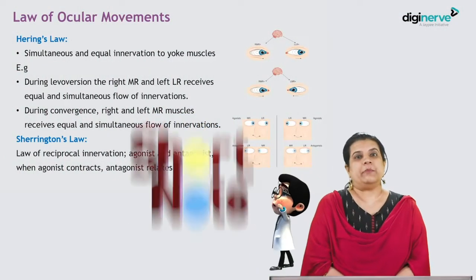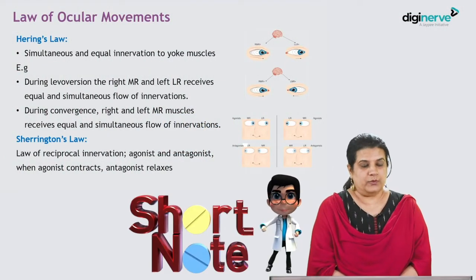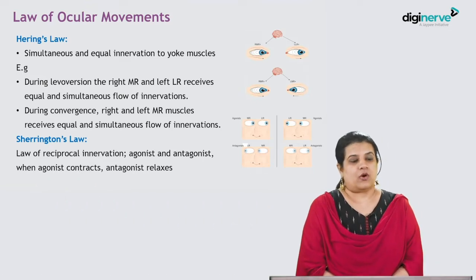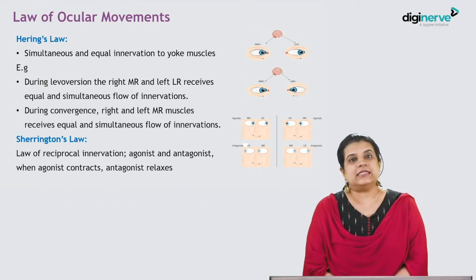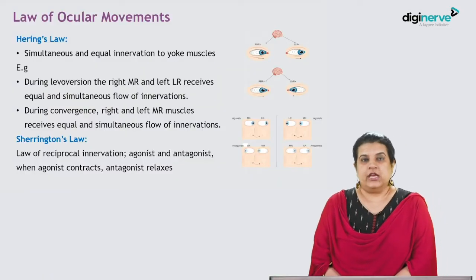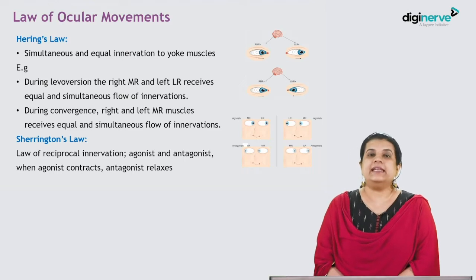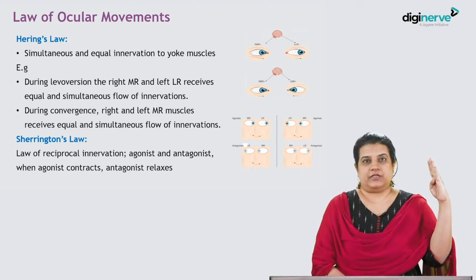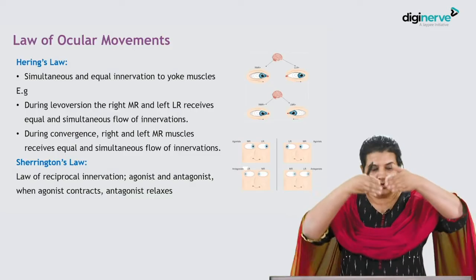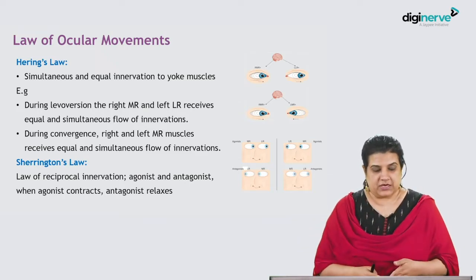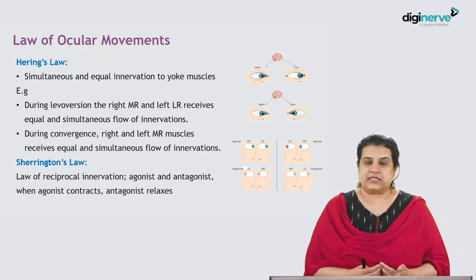Eye movements are governed by two laws: Hering's law and Sherrington's law. Hering's law refers to simultaneous and equal innervation to the yoke muscles. During levoversion, the right medial rectus and the left lateral rectus receive equal and simultaneous flow of innervation. During convergence, the right and left medial rectus muscles receive equal and simultaneous flow of innervation.